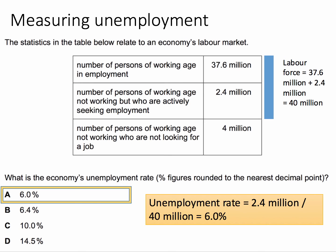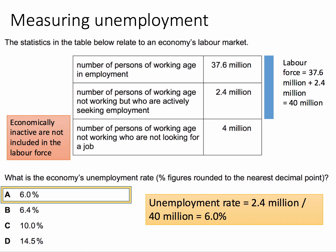The superfluous data — the irrelevant data in this question — is at the bottom, because those people who are out of work but not looking for work are treated as economically inactive, not in the labour force. That is the reason why the figure is 6%, not including those 3.5 million people.